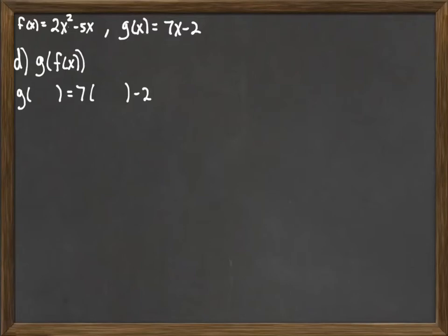And then we're going to fill in the blanks with whatever we're putting into g, which in this case is f of x. So the 2x squared minus 5x. We're going to plug that into our two blanks.